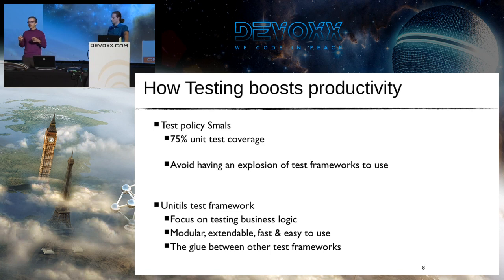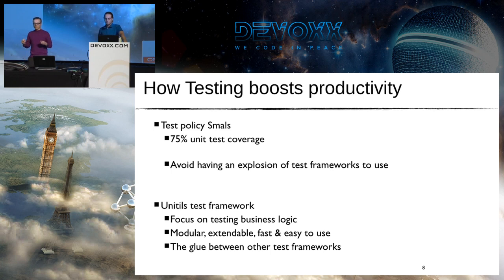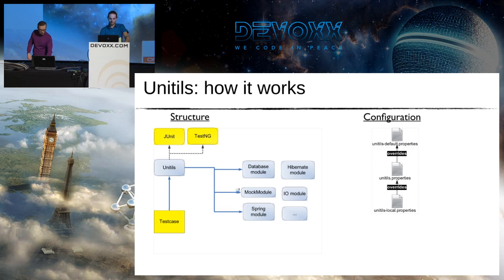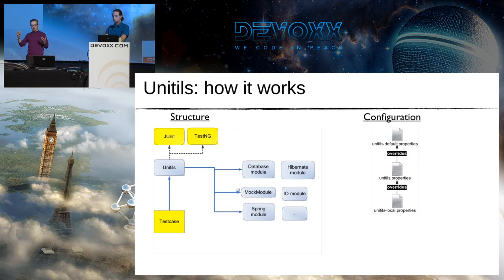On top of that, Unitils can act as glue: if you really need another testing framework, you can write a module that uses it, and suddenly it becomes available in your test set. Unitils hooks into JUnit or TestNG and comes with many modules where you find solutions for common testing problems. The core of Unitils itself is fairly small, oriented to be very fast and very stable.